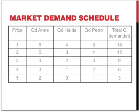The market demand is simply the sum of the individual quantities demanded by the different consumers. At a price of 1 Rand, Anne demands a quantity of 6. Add to that the 4 demanded by Haider and the 5 demanded by Pietro, and this adds up to a total of 15.